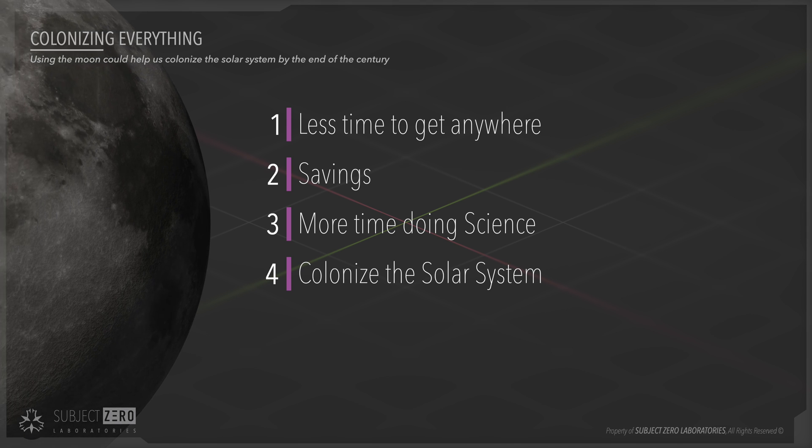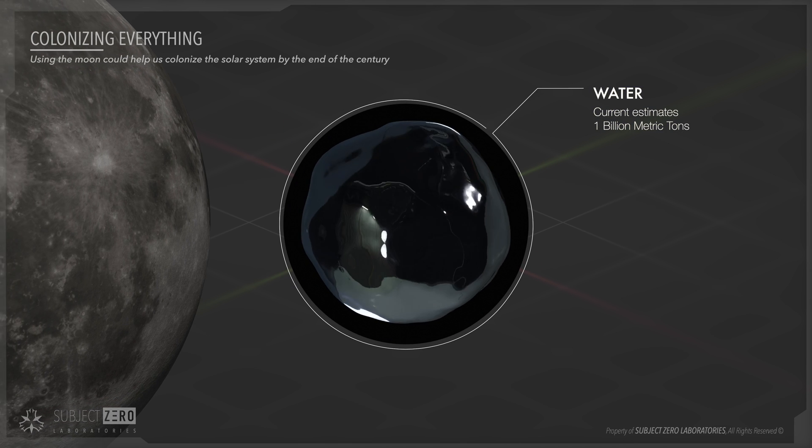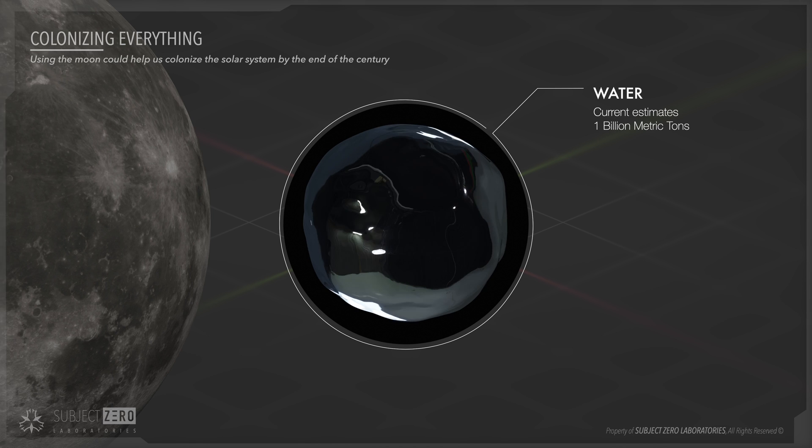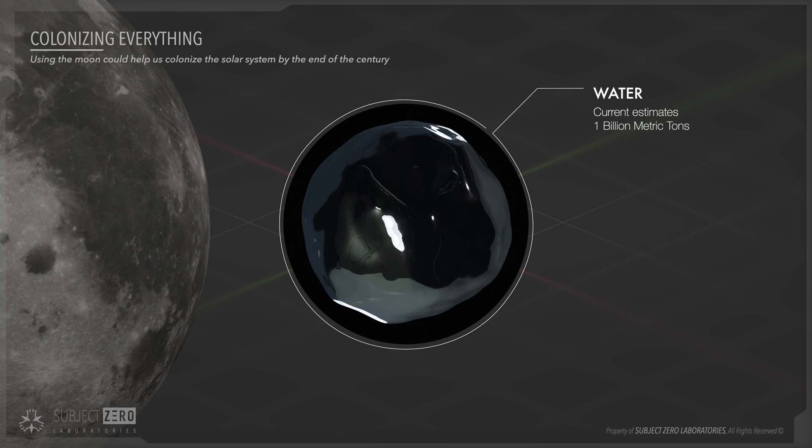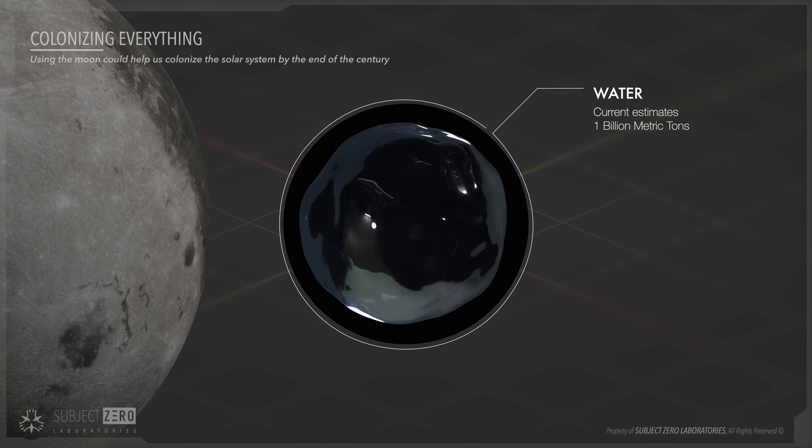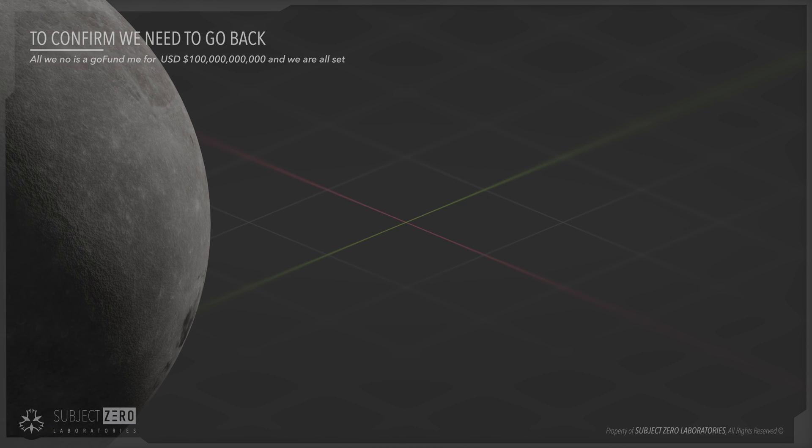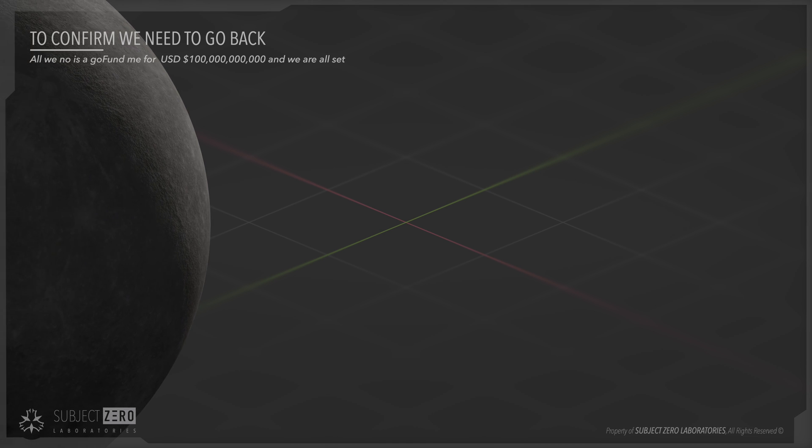But this will only be possible if we can confirm large and readily available water deposits on the moon. The current estimate sits around 100 million to 1 billion metric tons of water available there. These numbers may change once we go back, so take it with a grain of salt. So far what they found is promising, but only a moon mission to probe the surface will give us a clear picture of what is available. Hence why we need to go back and continue our moon explorations. Not only is it a good idea, but it is necessary for any future space exploration.